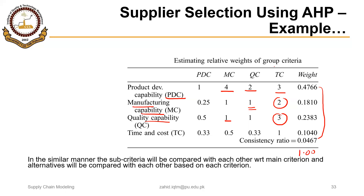In this case, product development capability is the most important factor with a weight of 0.47 out of 1.0. Quality capability is the second most important with a weight of 0.23. Then manufacturing capability, and time and cost is the least important factor in this case.